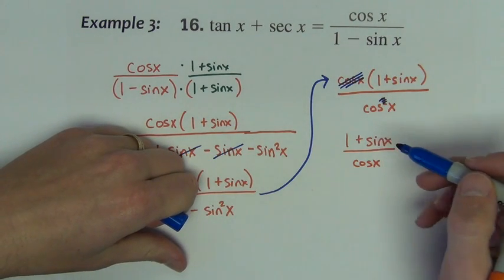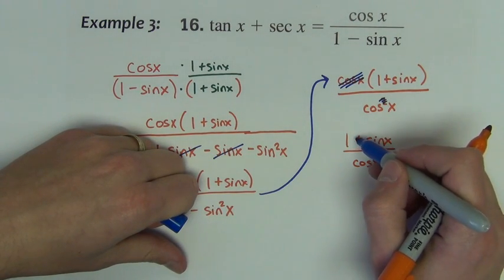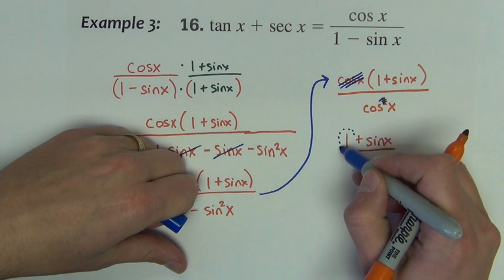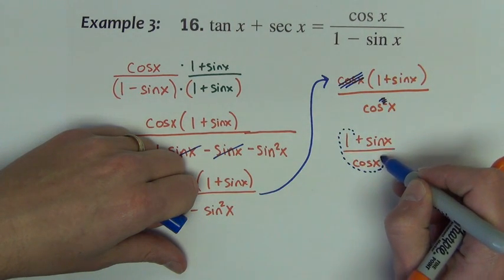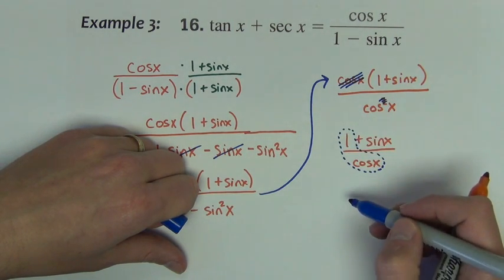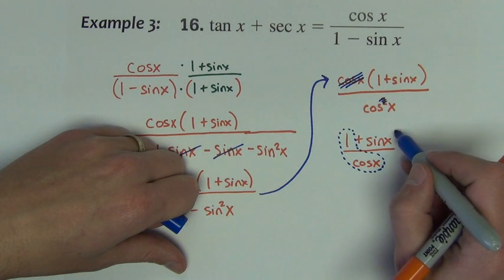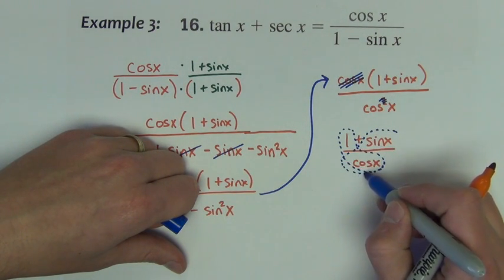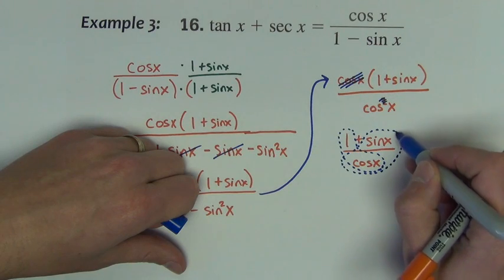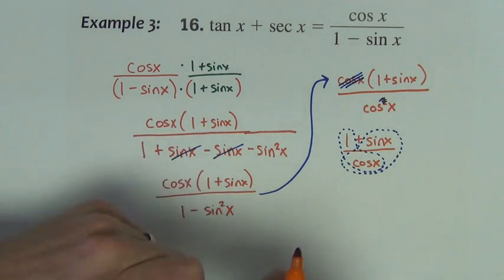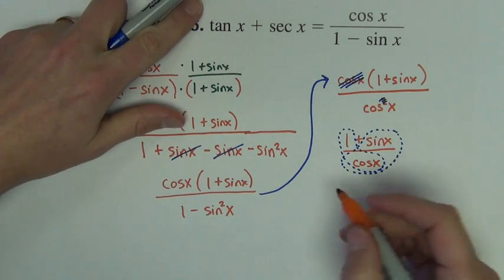Next, what I'm going to show you is a separation of this fraction. I'm going to split this up into 1 divided by cosine plus sine divided by cosine. We're allowed to split that up into two fractions should we need to.